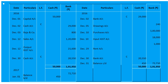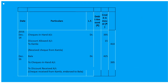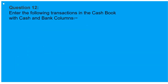Working notes for journal proper: December 14th — Cheques-in-Hand Account debited and Discount Allowed 15 debited, 'To Kamla' 410 rupees (cheques-in-hand 395, discount 15). December 16th — Bala's Account debited 425, 'To Cheques-in-Hand' 395, 'To Discount Received' 30 rupees.